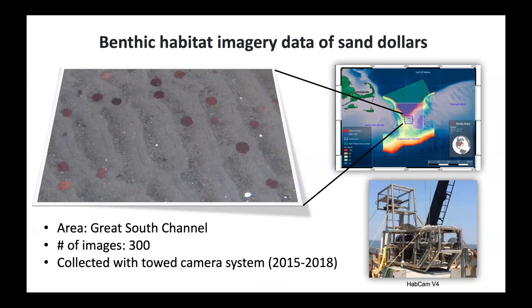Quick words about the data that we used. We are using seafloor images collected with this towed camera system that is called HabCam, version 4, and it shoots 6 frames per second flying at around 2 meters from the seafloor at a speed of 6 knots. We towed this camera with multi-beam and other sensors running at the same time. The area is in the Great South Channel area, around 90 meters deep, and we are trying to use this data to characterize the seafloor.